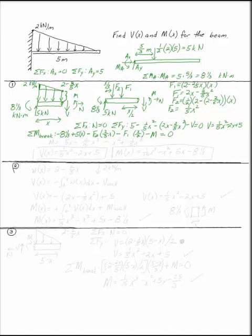The only term tending to spin things clockwise is five X; all the rest are counterclockwise. Working through the algebra: five X minus F2 times two-thirds X gives minus two-fifteenths X cubed, and F1 multiplied by X over two gives minus X squared plus one-fifth X cubed. So V(X) equals one-fifth X squared minus two X plus five, and M(X), combining the X-cubed terms, gives one-fifteenth X cubed minus X squared plus five X minus eight and a third. That's my answer.